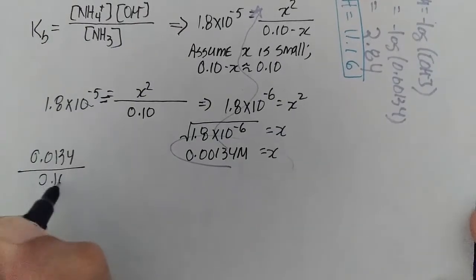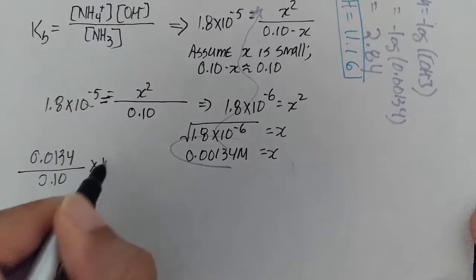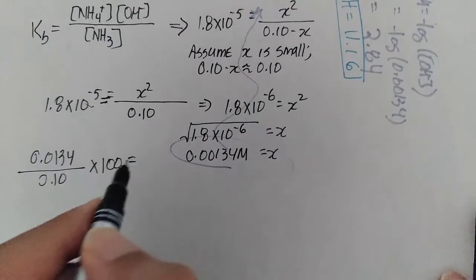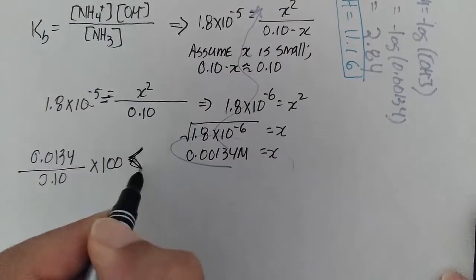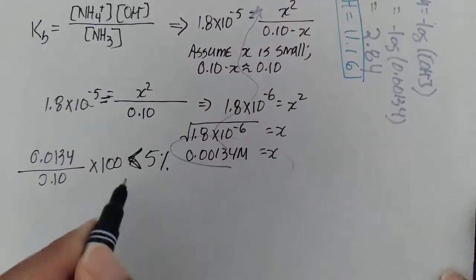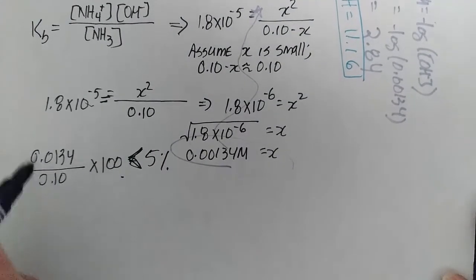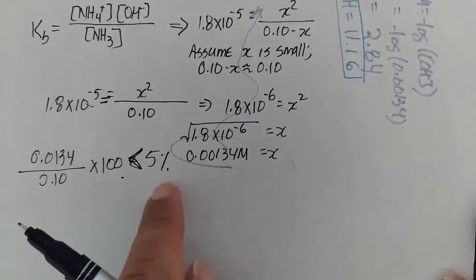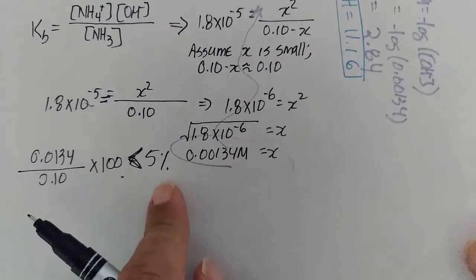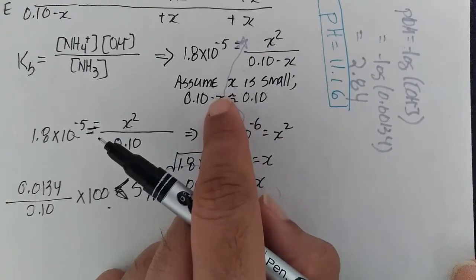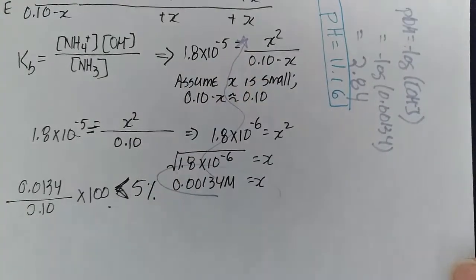We'll multiply it by 100 to get it as a percent. This percentage must be less than 5%. This fraction is the percent ionization. If you have greater than 5% ionization, then this assumption is not correct, it's not valid. You'll have to solve for x using the quadratic. If it's less than 5%, then the assumption is valid and our answer is perfectly fine.